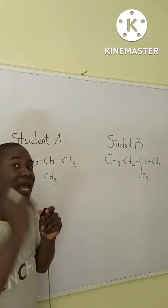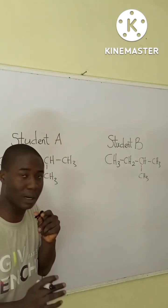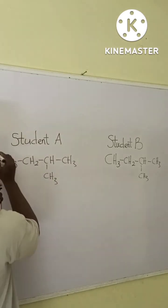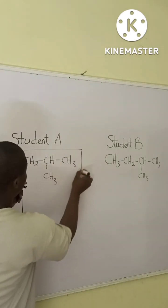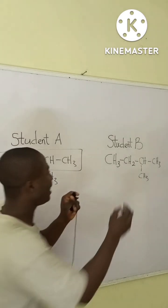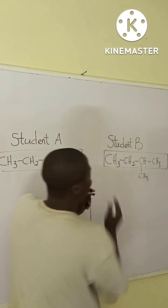So, the first of the steps here is to simply identify the longest continuous carbon chain. Now, let's say student A identified the longest continuous carbon chain to be this, and also student B identified the longest continuous carbon chain to be this.